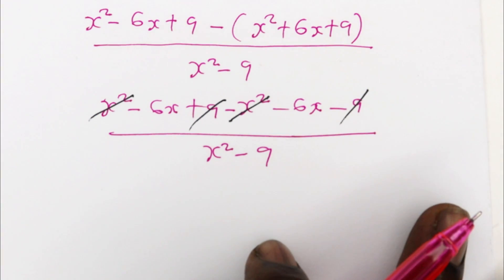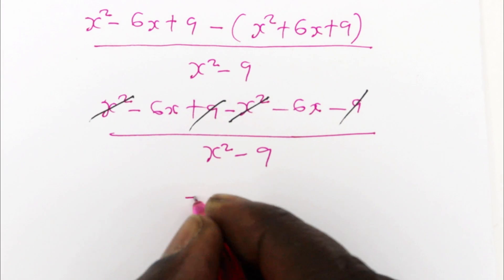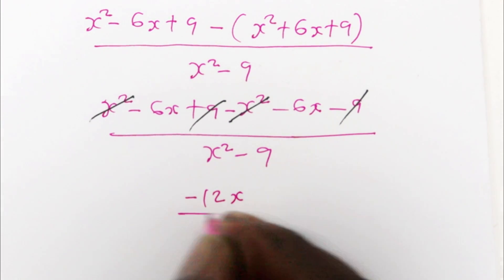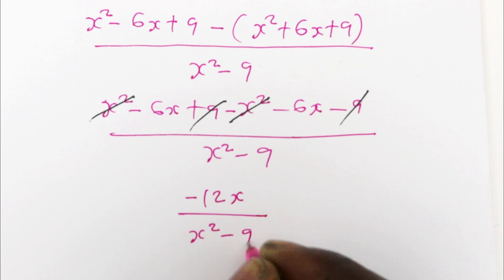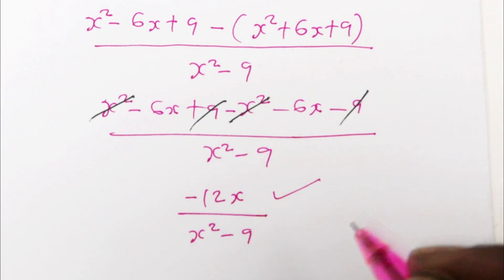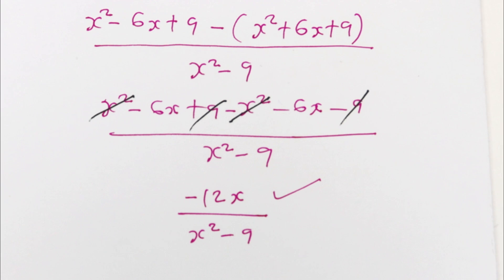So that is 0. The result is -12x over x² - 9. That's the simplest form of that particular expression. Thank you for watching. Please subscribe.